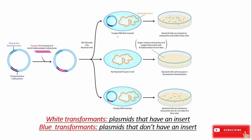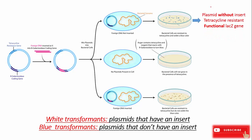In the first case, foreign DNA is not inserted into the vector. When grown on an agar plate, blue colonies will form because the plasmid is without insert, the cells are tetracycline resistant, and the lacZ gene is functional.